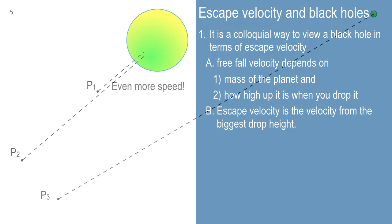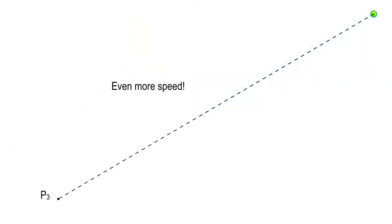And if you go a little further out, there's point P3 way out there. If you drop a baseball from that height, you're going to get a lot more speed at impact.